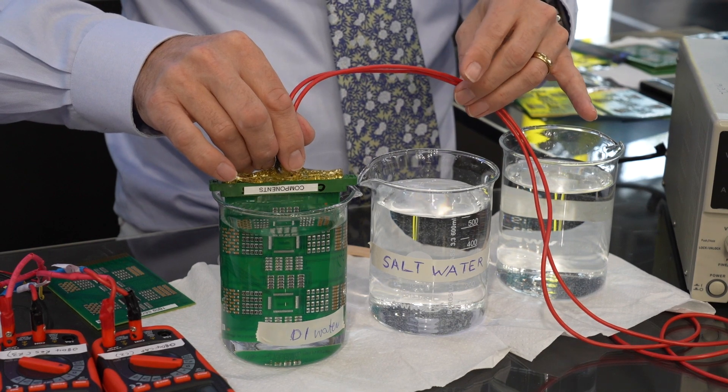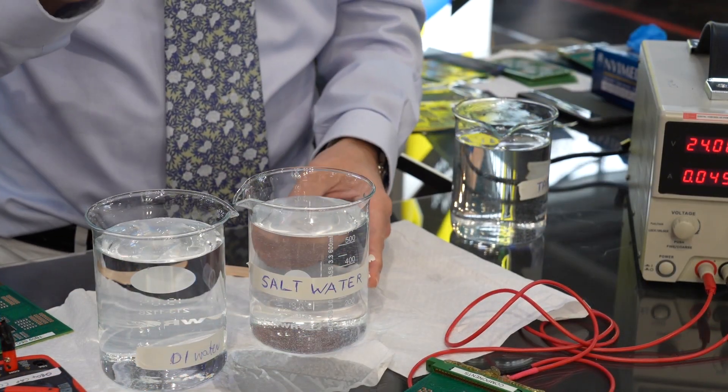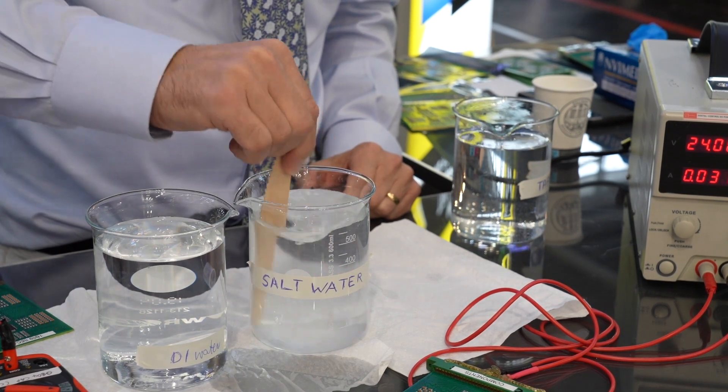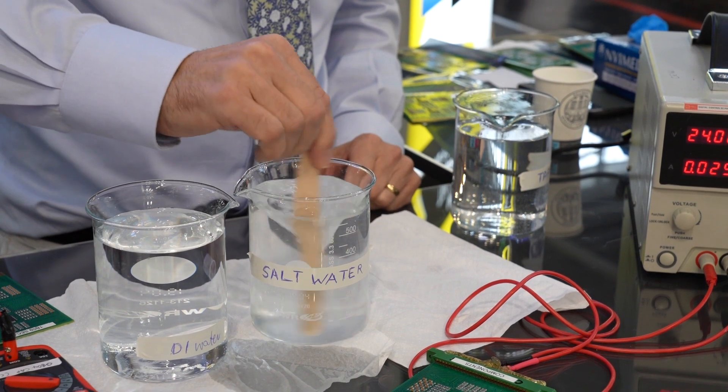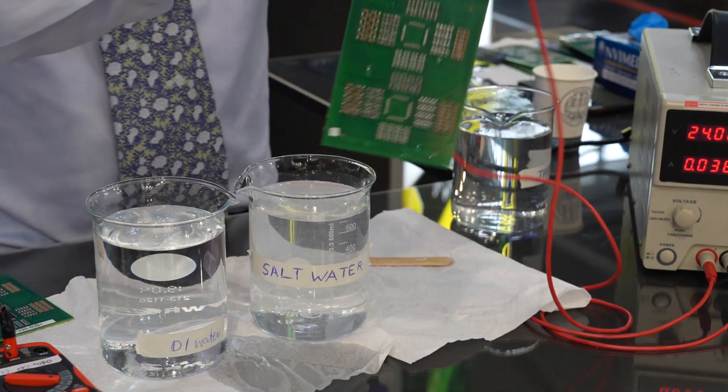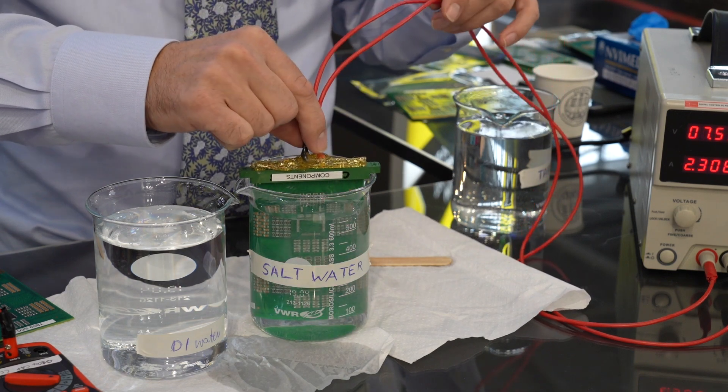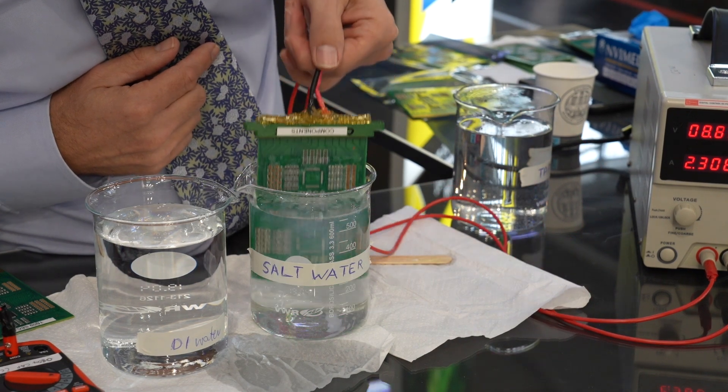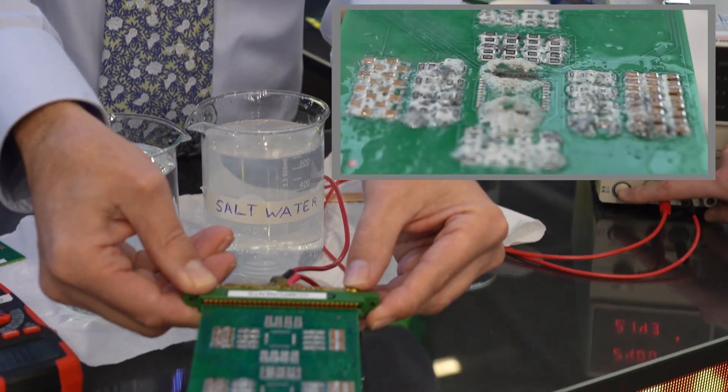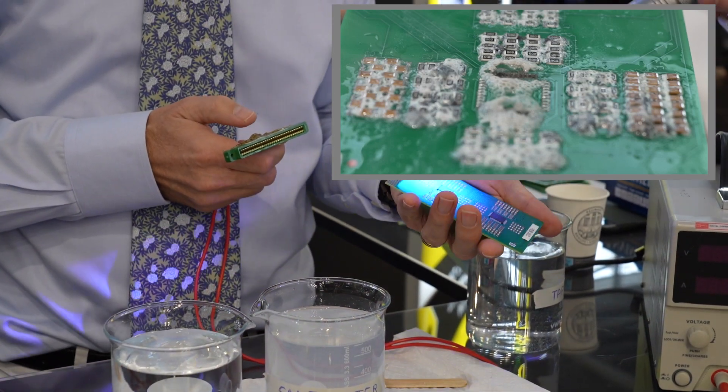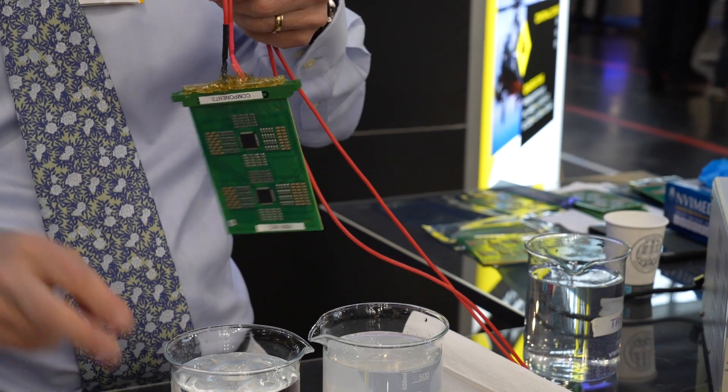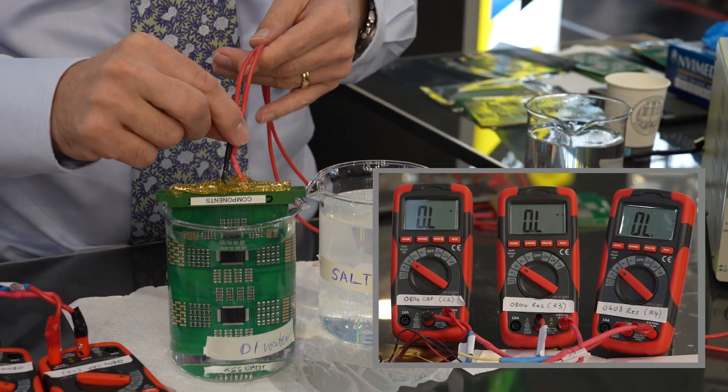Now I'm seeing leakage current. I'm going to pour salt into the beaker of water. And I'm going to immerse the circuit board in the salt water. I think we can see we've got over two amps of leakage current and the board has failed. So again, this is the board I showed you earlier which we sprayed water droplets onto.